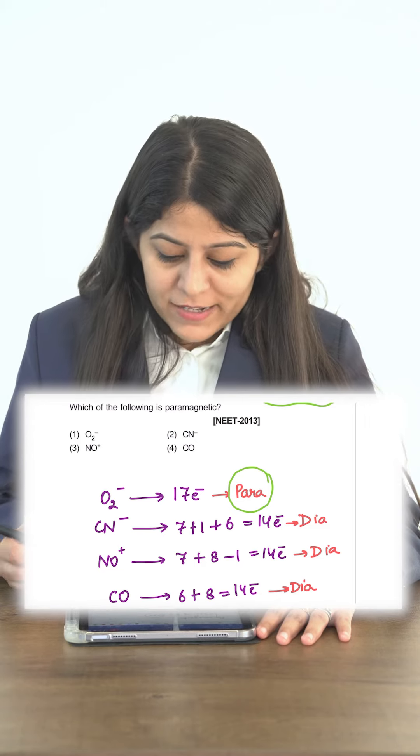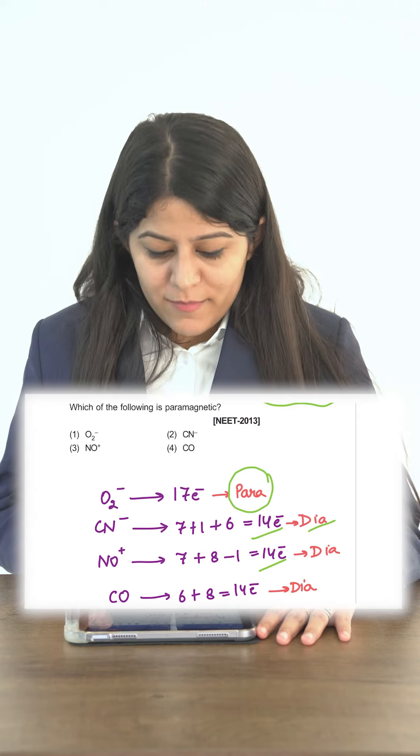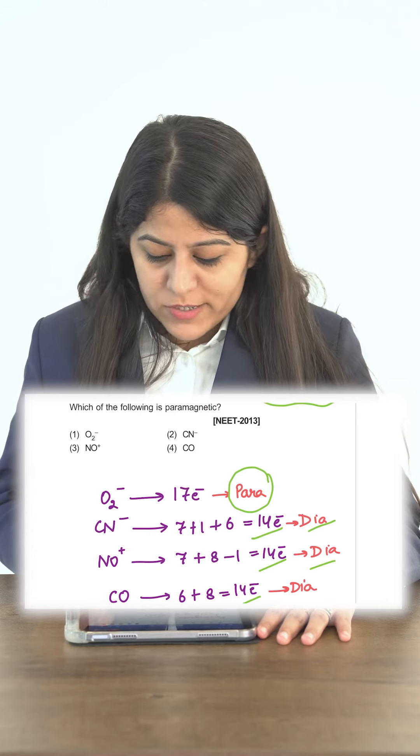Then the next is CN minus, 14 electrons, so it's diamagnetic. NO plus, again 14 electrons, diamagnetic. CO again, 14 electrons, diamagnetic.